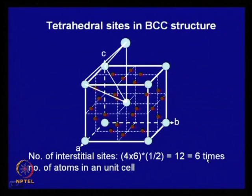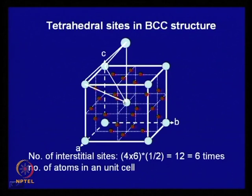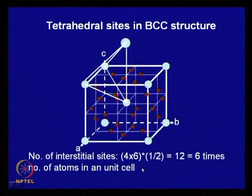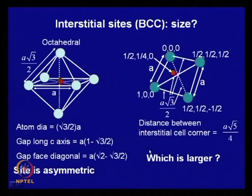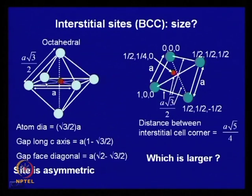So there are 12 tetrahedral sites, which is 6 times the number of atoms in a unit cell. The packing density gaps are divided into octahedral and tetrahedral sites. Since there are more tetrahedral sites, they are obviously smaller than octahedral sites. Here is a method illustrated to calculate the gap or dimension of the interstitial site. The octahedral site is much easier to visualize.